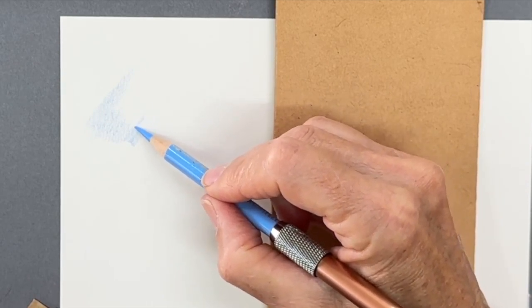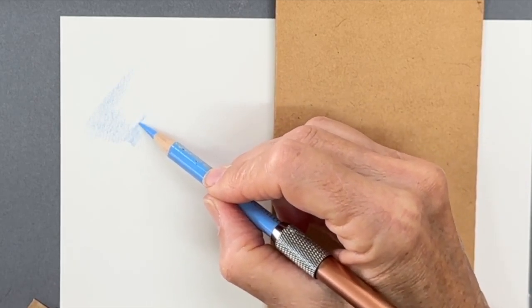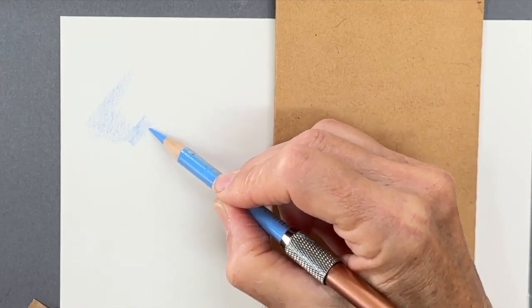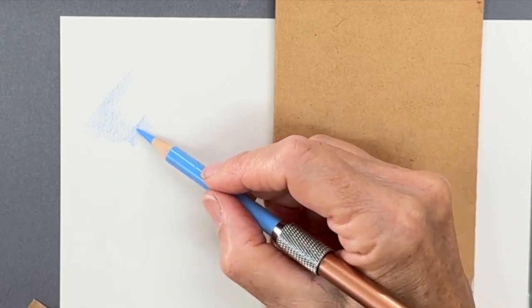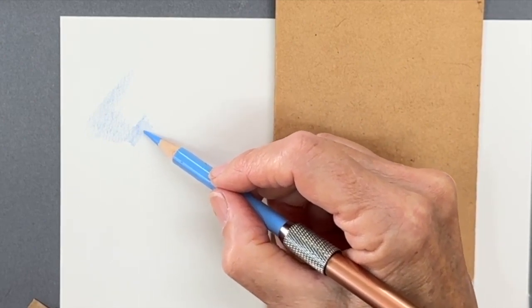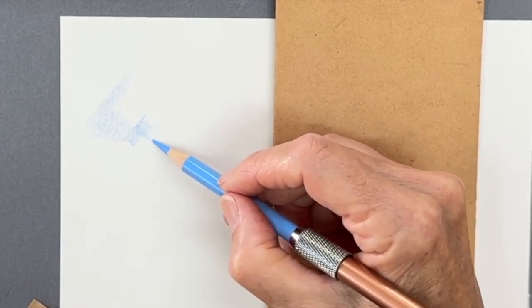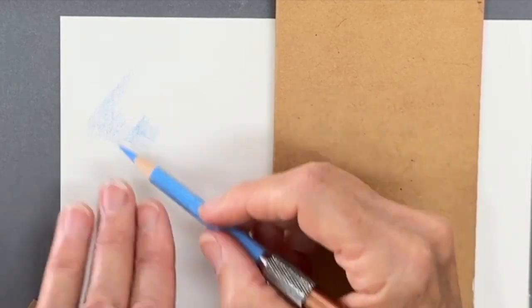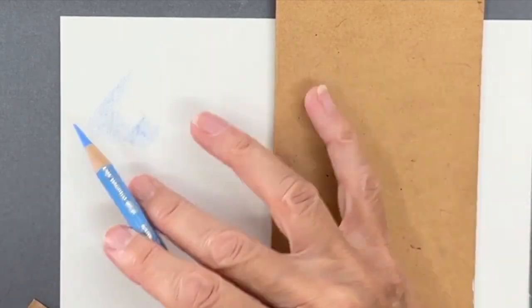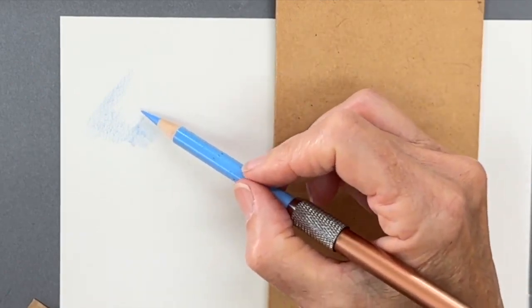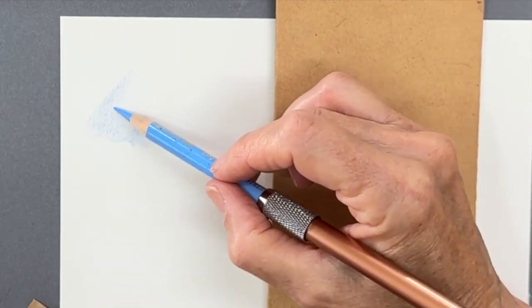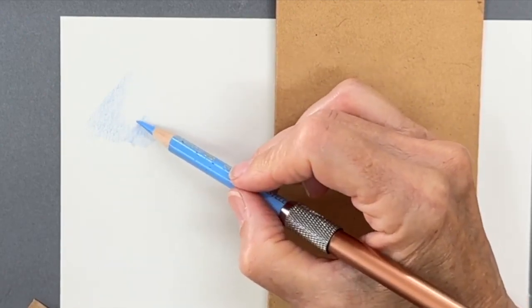When you start on this side and do the next batch, the same thing happens. If you slightly cross over, you actually end up with a hard line in the middle, which makes it more difficult to get a smooth transition. When you come back in on this side to do your next run...